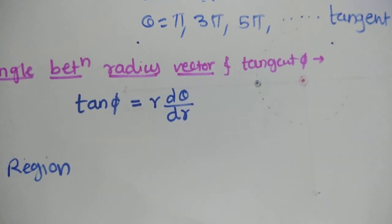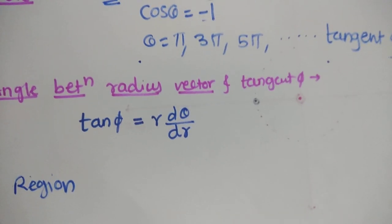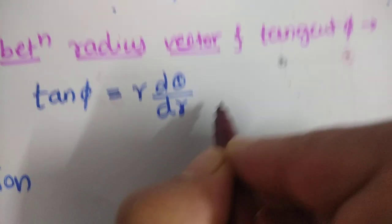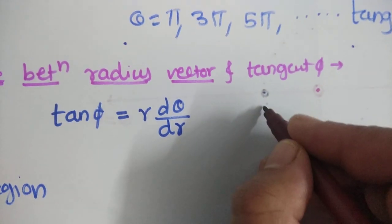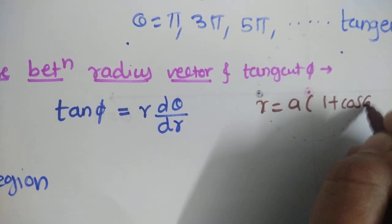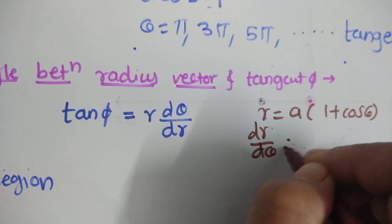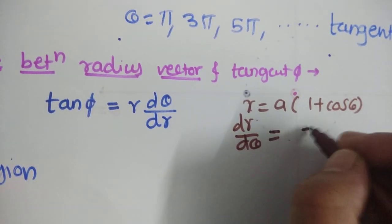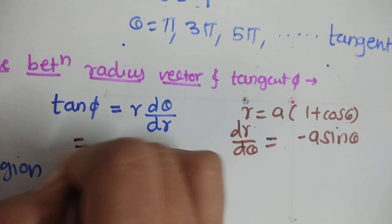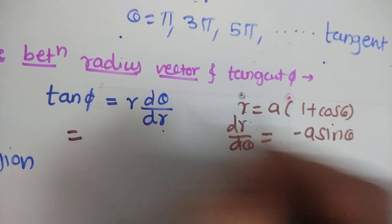To find the angle φ between the radius vector and the tangent, we use the formula tan φ = r dθ/dr. We have r = a(1 + cos θ), so differentiating with respect to θ gives dr/dθ = −a sin θ. Therefore, r dθ/dr = a(1 + cos θ) divided by (−a sin θ).